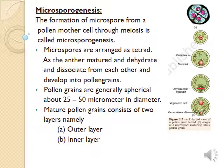Microsporogenesis is the birth of microspores from the microspore mother cell through meiosis. Microspores are arranged as a tetrad. After maturation of the anther, the anther bursts open to release these microspores.